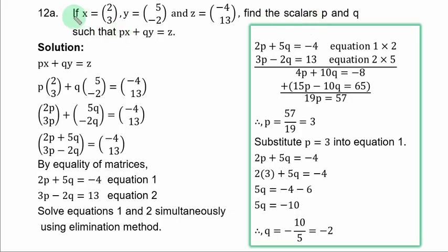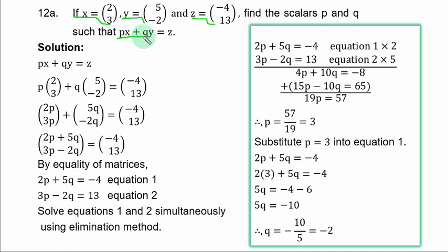Question 12a. If S, Y, and Z are column vectors with elements S = (2, 3), Y = (5, -2), Z = (-4, 13), find the scalars p and q such that pS + qY = Z. Simply replace S, Y, and Z with the column vectors: p(2,3) + q(5,-2) = (-4,13), giving (2p + 5q, 3p - 2q) = (-4, 13).